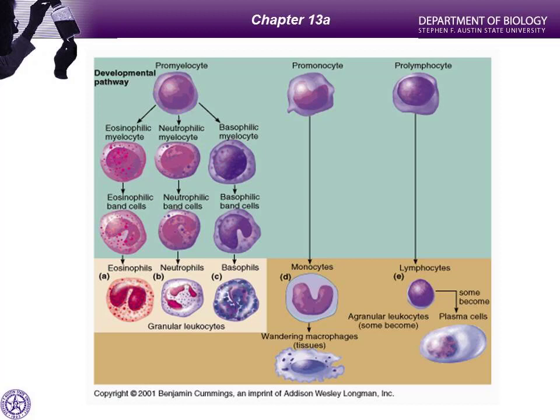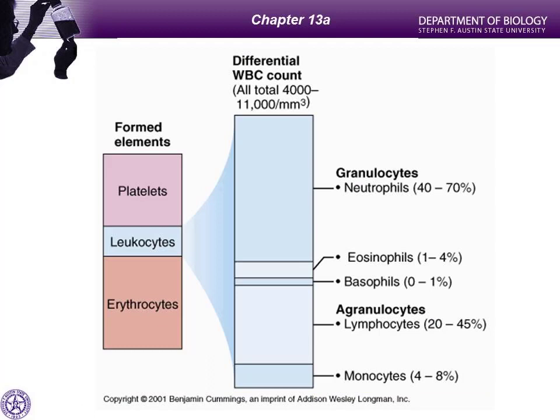When you centrifuge blood to determine a hematocrit, erythrocytes settle at the bottom at about 45% of blood volume. Between the red blood cells and plasma is a small white layer called the buffy coat, which contains leukocytes and platelets. Platelets are more numerous than leukocytes but are very tiny, while leukocytes are larger.